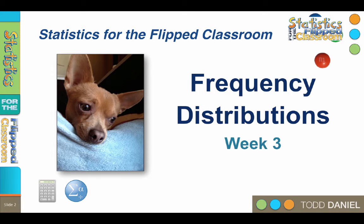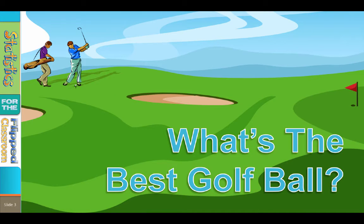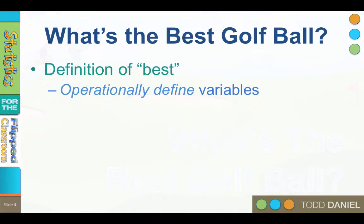Let's move from poker chips to another way of thinking about frequency distributions. I have an interesting research question: what is the best golf ball? And I would like for you to help me answer that question. Now the first thing that you might want to ask me is, what do I mean by best? How am I defining the word best when I say best golf ball? You want me to operationally define the qualities of the best golf ball.